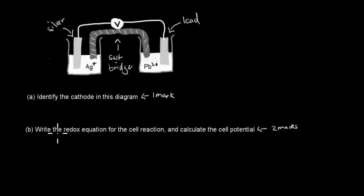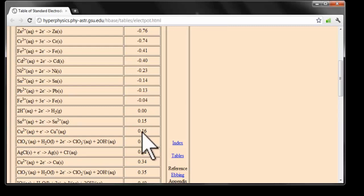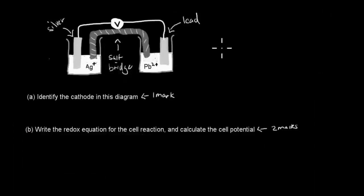And B, write the redox equation for the cell reaction and calculate the cell potential. And to do both A and B, you will need to have your table of standard reduction potential, and I've actually attached it into your video descriptions. So, check the video descriptions, and that's your link to this table, which you should be using to answer that question. I'll give you five seconds to pause the video, and then when you're ready, press play, and I'll go for the answer itself.